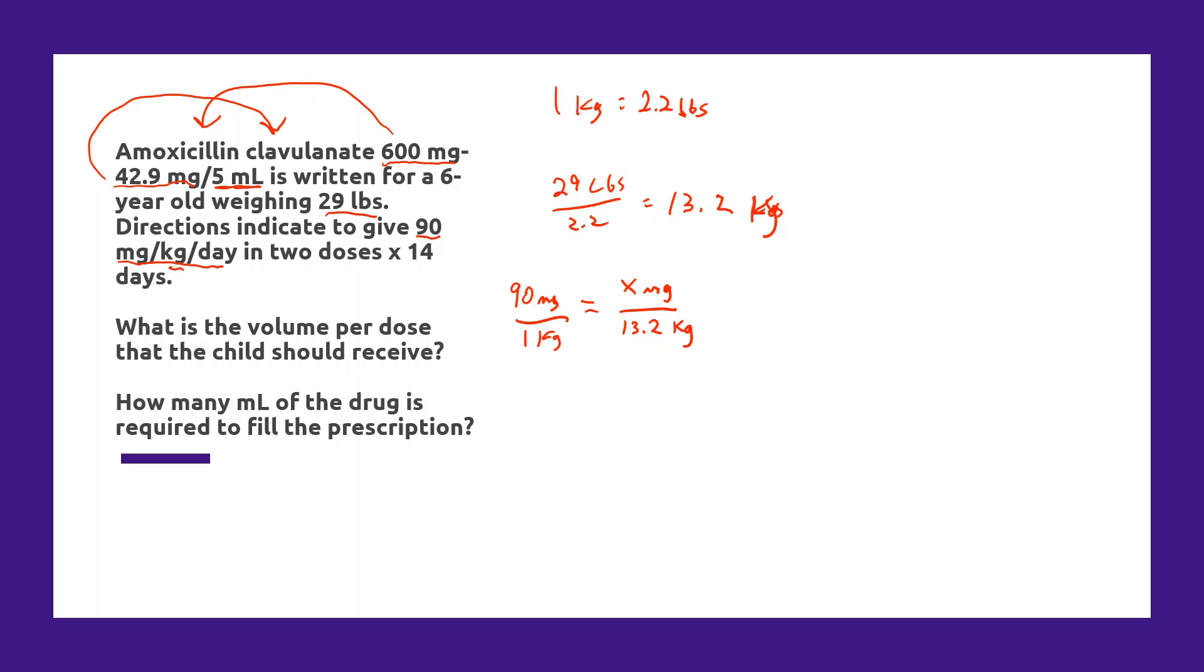When we set up a proportion, we always put what we're solving for in the numerator on the right. We put our known ratio here on the left, keeping the units in the same position. To solve that, it's simply 90 divided by one times 13.2. The units cancel out when you do it this way. We simply would have 90 times 13.2, which is equivalent to 1,188 milligrams. And remember that's per day, but we have two doses. So we can divide that by two and that's going to give us the total milligrams per dose. That divided by two is 594 milligrams per dose.